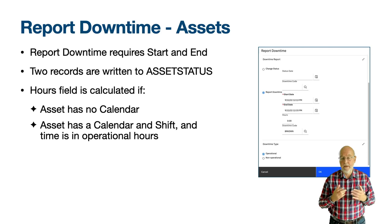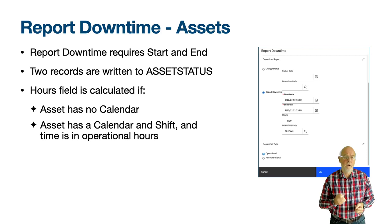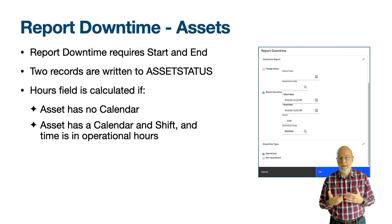If an asset goes down, downtime should be recorded for the asset. However if there is a standby asset that kicks in automatically then there would be no lost time and hence you would mark this as non-operational. If a manual action is needed to connect the standby asset then you may record two downtime records, one operational and the other non-operational. When you define your downtime codes it is worth playing through some scenarios and determining what would be marked as operational and non-operational downtime and how planned and unplanned downtime will be derived. There is no field in Maximo Manage that indicates this.